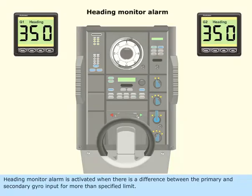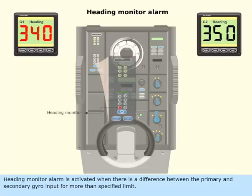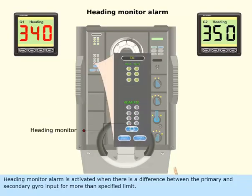Heading Monitor Alarm is activated when there is a difference between the primary and secondary gyro input beyond the specified limit.